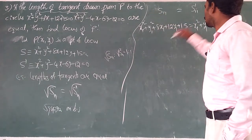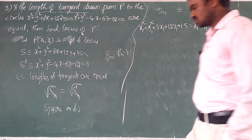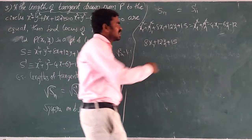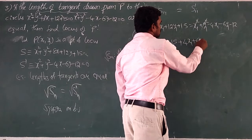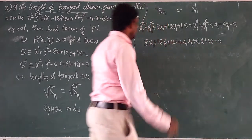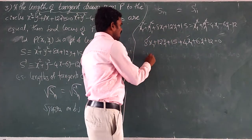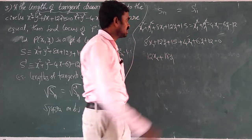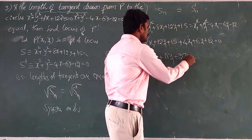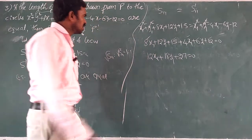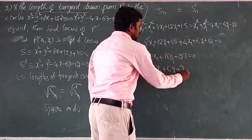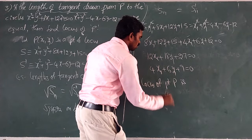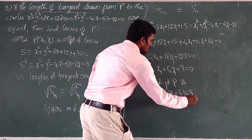The x₁² and y₁² terms cancel from both sides. Bringing remaining terms to the left: 8x₁ + 4x₁ = 12x₁, and 12y₁ + 6y₁ = 18y₁, and constant 15 + 12 = 27. So 12x₁ + 18y₁ + 27 = 0. The common factor is 3, giving 4x₁ + 6y₁ + 9 = 0. Therefore the locus of point P is 4x + 6y + 9 = 0.